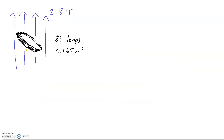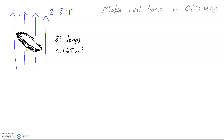Let's try another one. In this question, we've got a coil with 85 loops and an area of 0.165 meters squared, in a 2.8 Tesla field, at an angle 40 degrees off of the horizontal. We're going to make the coil horizontal in 0.75 seconds. We'll find the induced EMF and draw the induced current in the coil.